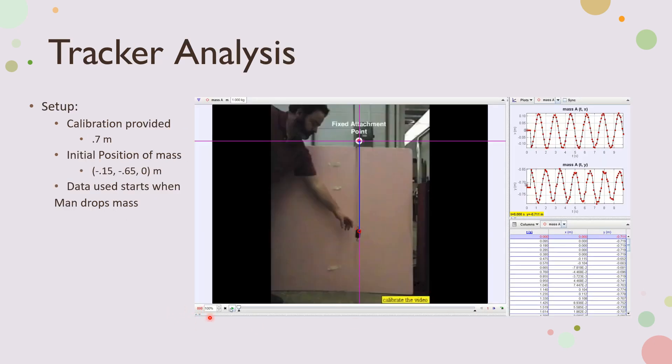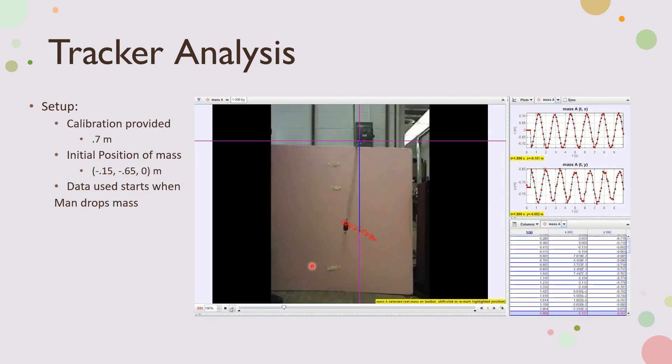So here we have the tracker analysis. This is the video of me doing the tracker. As you can see, the calibration stick in the blue is 0.7 meters, which was provided by the lab instructions, and the initial position of the mass, which I found using tracker, is negative 0.15, negative 0.650 meters. And the data used starts when the man drops the mass, even though there's a slight period on the graphs here where it's zero. That's just when the video is the starting frame.